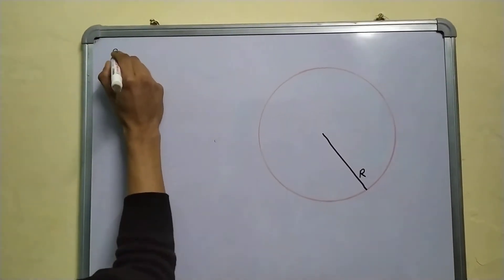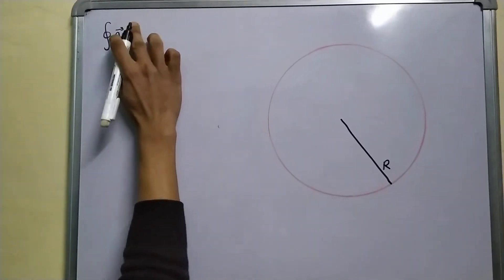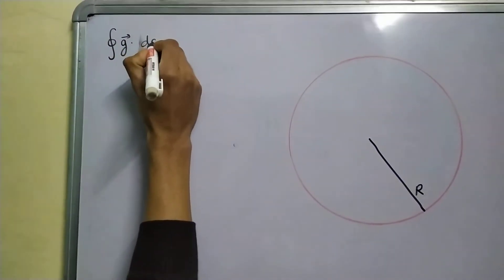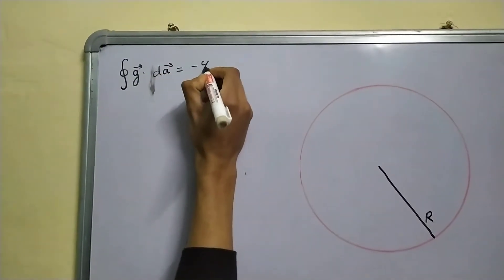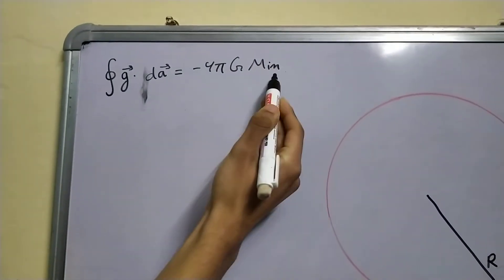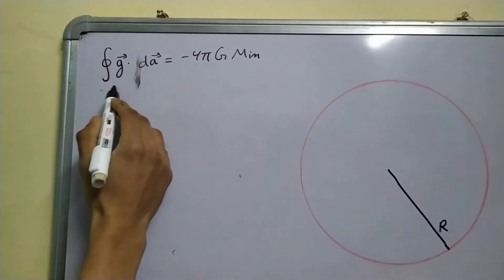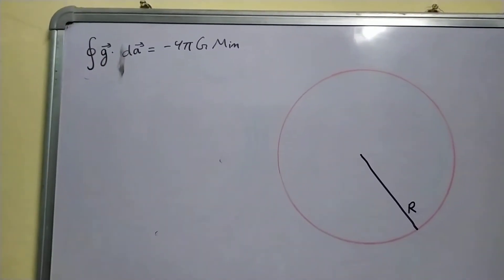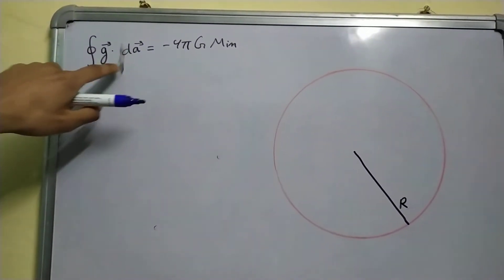This is what the law says: surface integral g dot dA equal to minus 4 pi G m internal, where m is the mass inside the surface on which you are integrating g dot dA.